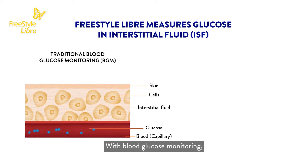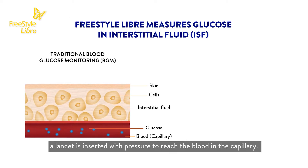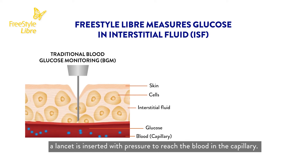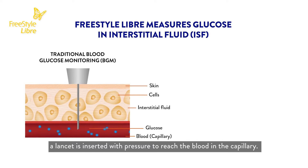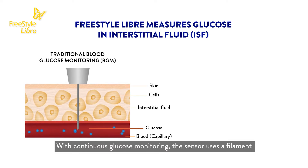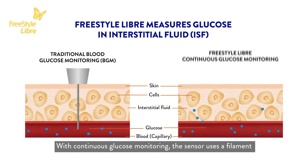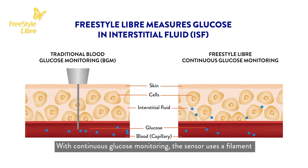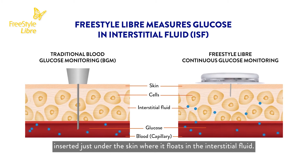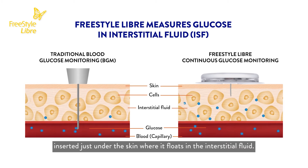With blood glucose monitoring, a lancet is inserted with pressure to reach the blood in the capillary. With continuous glucose monitoring, the sensor uses a filament inserted just under the skin where it floats in the interstitial fluid.